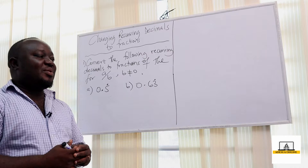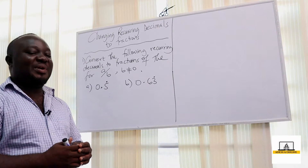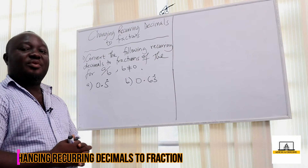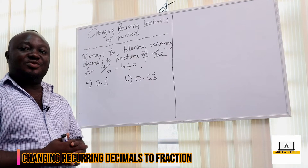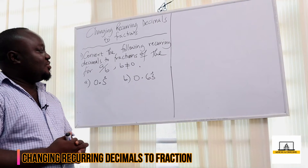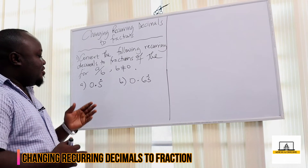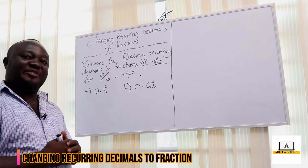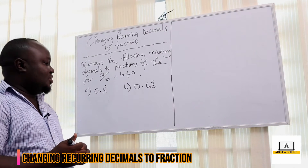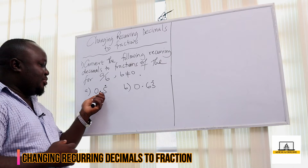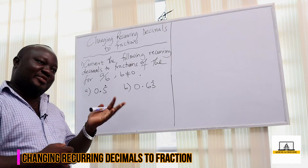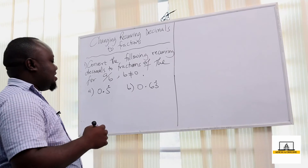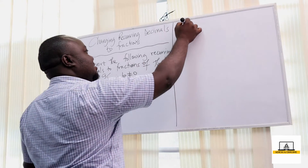We are going to continue our lesson by learning how to convert recurring decimals to fractions. We start off by converting 0.5 with a dot on top, which means the 5 is recurring. This is the same as 0.55555... to infinity.